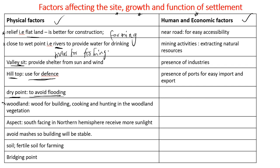Woodland and forests around a settlement provide wood for building, cooking, and hunting. The aspect of buildings — south-facing in the northern hemisphere — will receive more sunlight. Buildings should also avoid marshland; marshland has a high amount of water which makes the foundation soft and unstable. Soil fertility matters for farming, and bridging points — where you can cross a river — make areas more accessible.